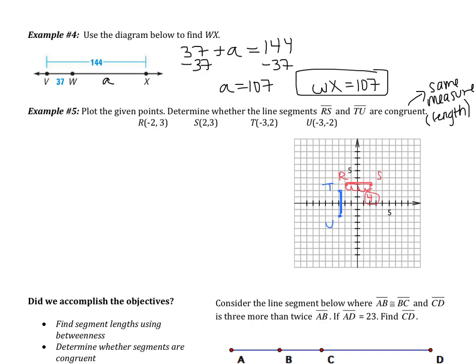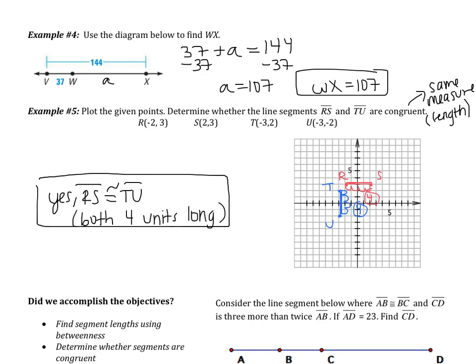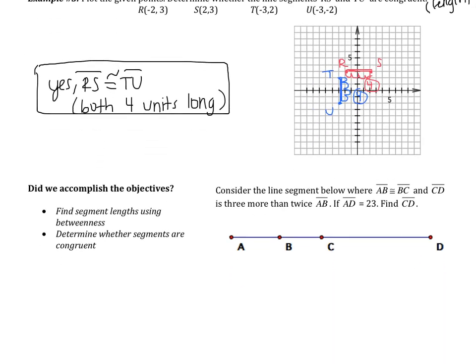For TU, I'm going to count the boxes again. So I have one, two, three, four. So TU is also four units long. So in this case, are they congruent? Well, yes, the two segments are congruent. So we would say, yes, RS is congruent to TU. And I'm going to say they are both four units long. That's the end of the notes with me.